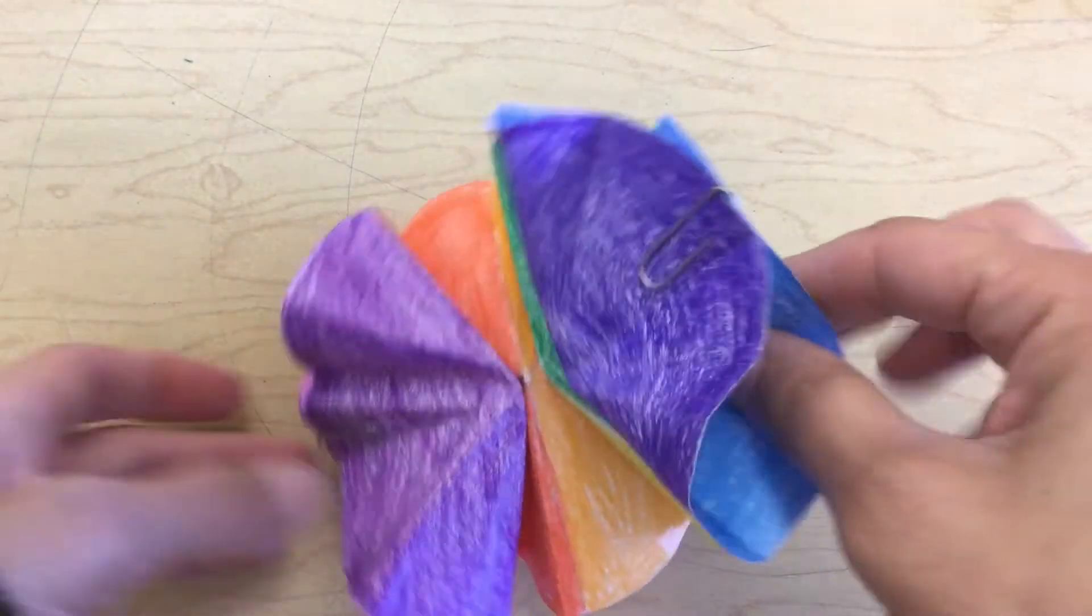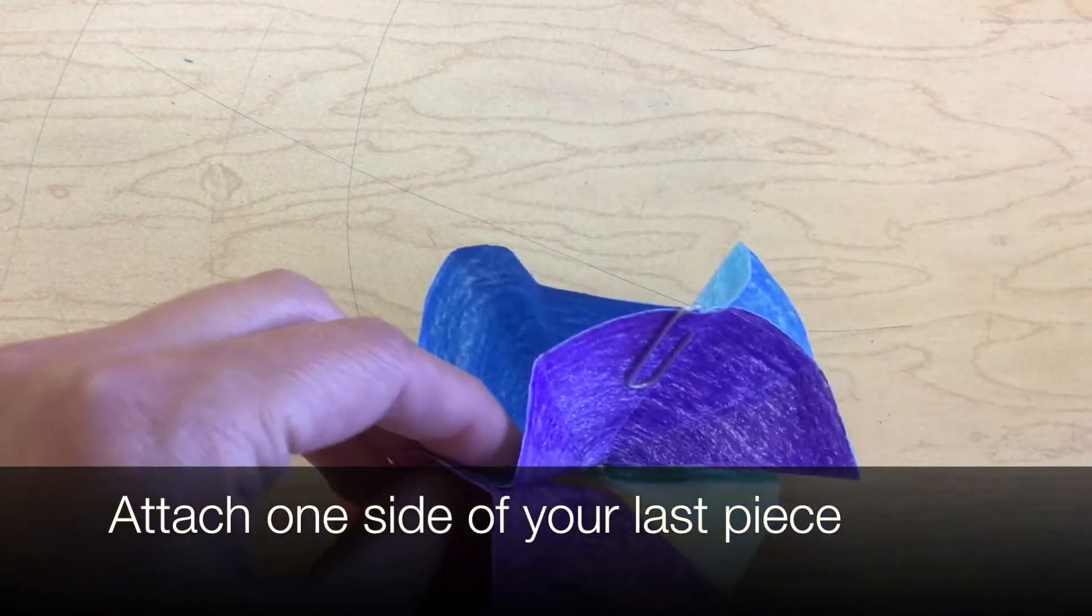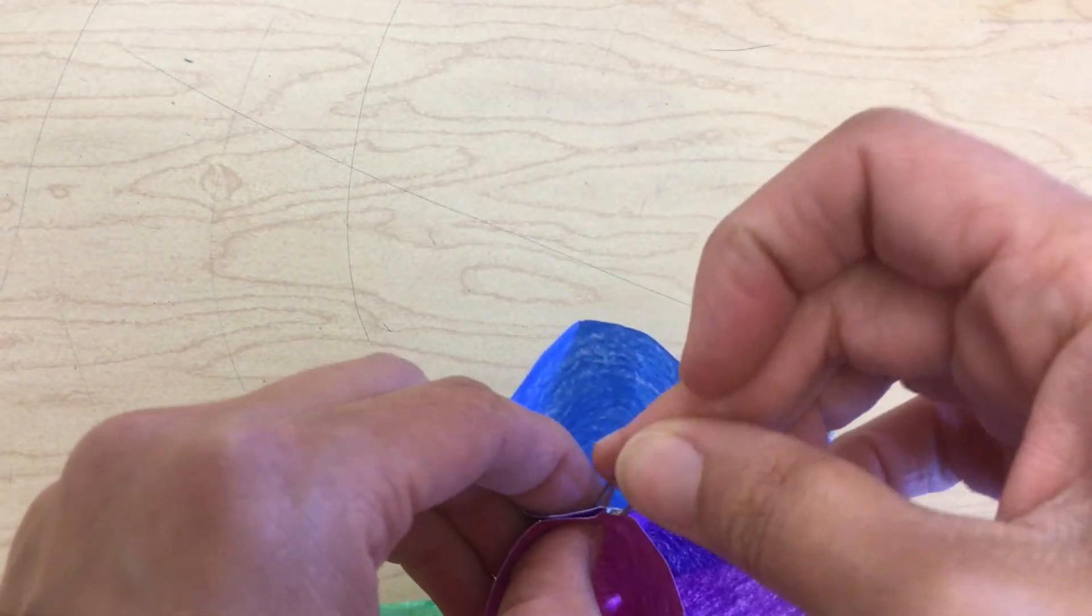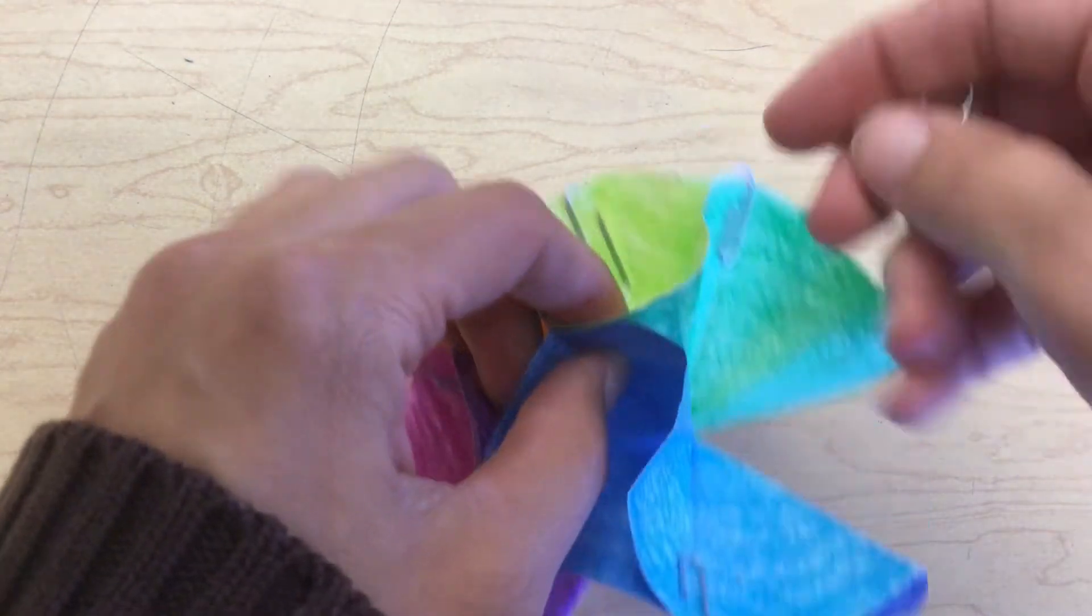When you are adding your last piece, attach three of the four sides before you completely finish the color wheel. You will need to add a string if you want to hang it before you put the last paper clip in.